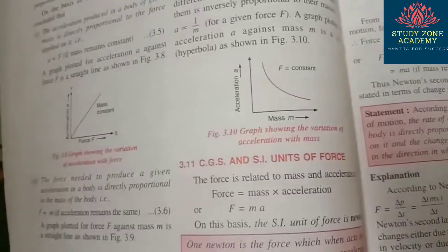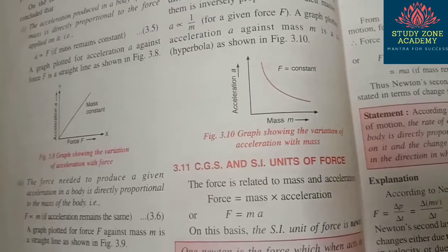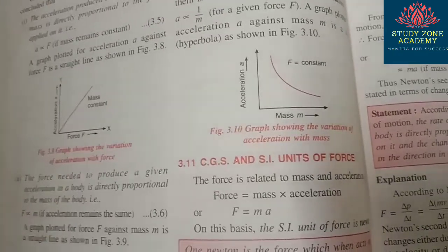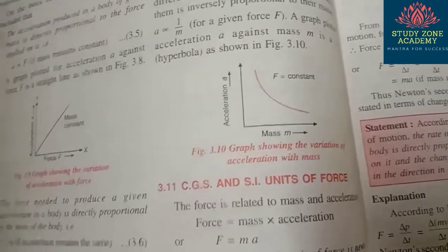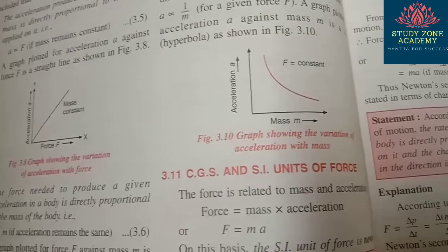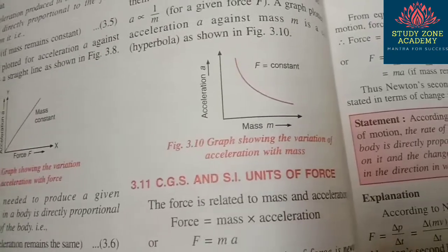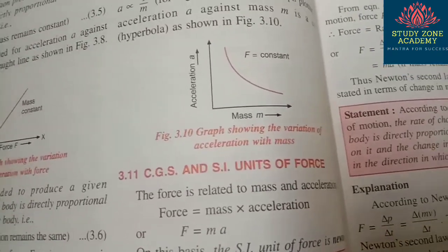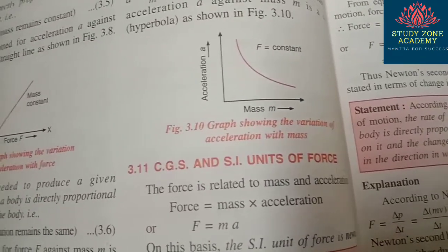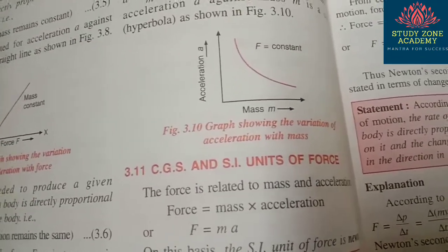You might get a question: what is the name of the graph showing the variation of acceleration with mass? The answer is asymptotic — that is the name of the graph.